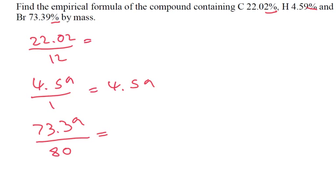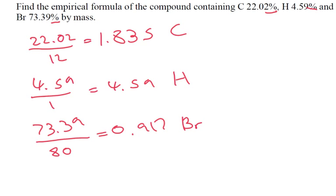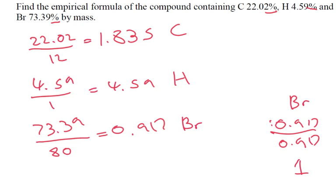So 22.02 divided by 12 gives us 1.835 for carbon. For bromine, 73.39 divided by 80 gives us 0.917. So bromine = 0.917, hydrogen = 4.59, carbon = 1.835. We're going to divide by the smallest, which is bromine. So 0.917 divided by 0.917 gives us 1. Hydrogen: 4.59 divided by 0.917 gives us 5.